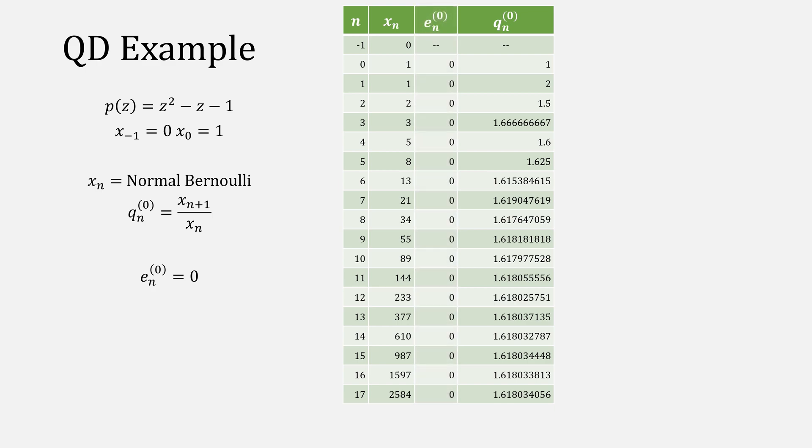Our next column for e is given by this equation, simply a difference of q's added with our previous column's value for e.